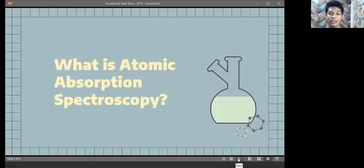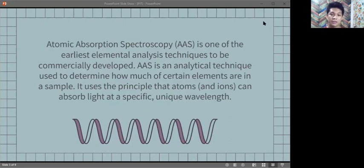So, what is Atomic Absorption Spectroscopy? Atomic Absorption Spectroscopy, or AAS, is one of the earliest elemental analysis techniques to be commercially developed. AAS is an analytical technique used to determine how much of certain elements are in a sample. It uses the principle that atoms and ions can absorb light at a specific, unique wavelength.